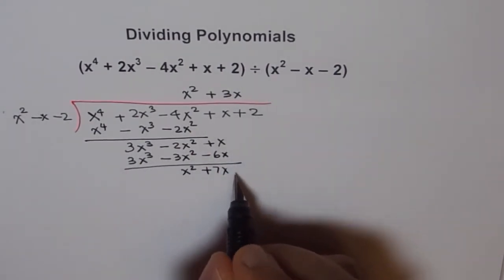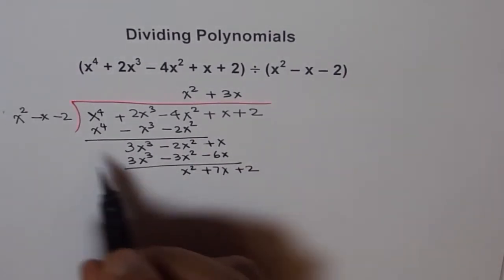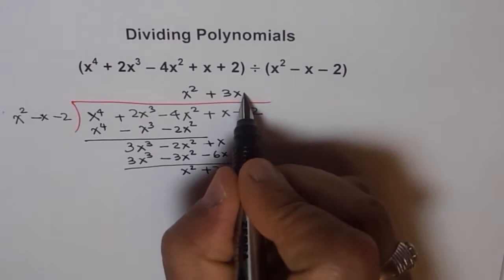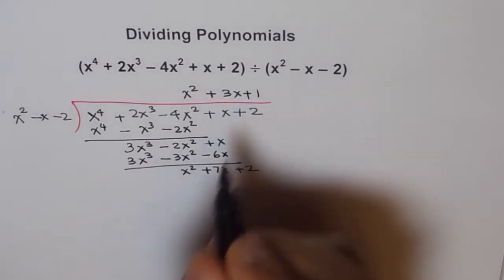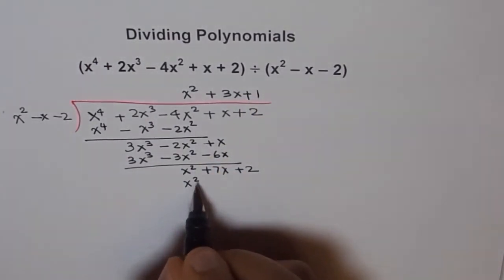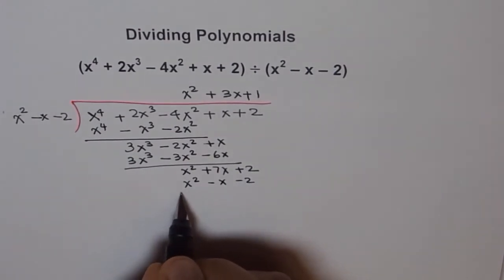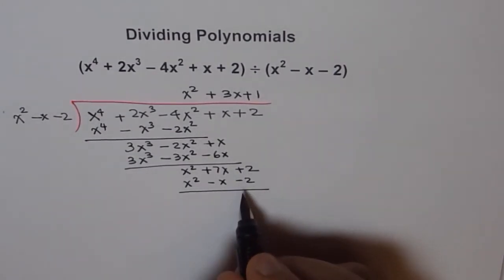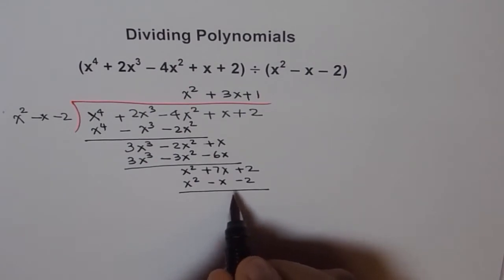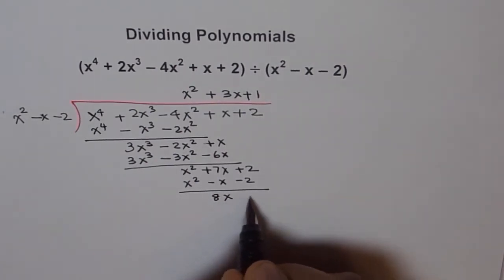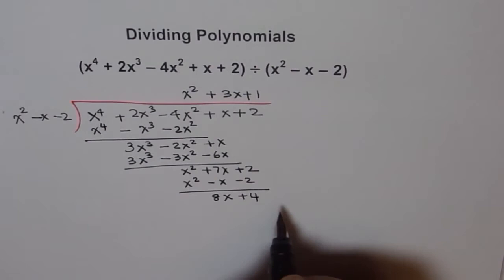We bring down the last term, which is plus 2. X squared is matched by 1 times x squared, so plus 1 in the quotient. We get x squared minus x minus 2. When we take that away, 7x minus (negative x) gives 8, so we get 8x plus 4.